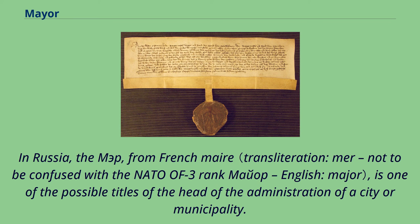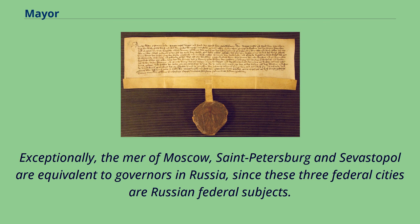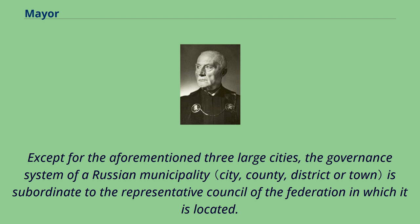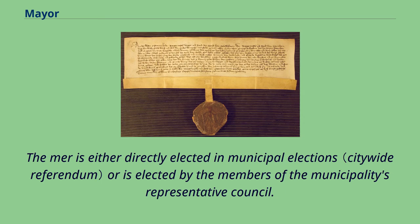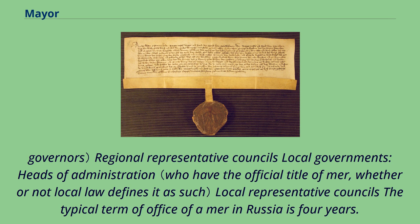In Russia, the term mayor — from the French — is one of the possible titles of the head of the administration of a city or municipality. This title is equivalent to that of the head of a Russian rural district. Exceptionally, the mayors of Moscow, St. Petersburg, and Sevastopol are equivalent to governors in Russia, since these three federal cities are Russian federal subjects. Except for these three large cities, the governance system of a Russian municipality is subordinate to the representative council of the federation in which it is located. The mayor is either directly elected in municipal elections or is elected by the members of the municipality's representative council. Election by council members is now more widespread because it better integrates with the Russian federal three-level vertical governance structure. The typical term of office of a mayor in Russia is four years.